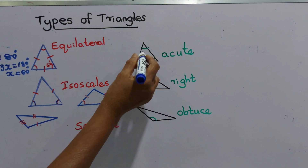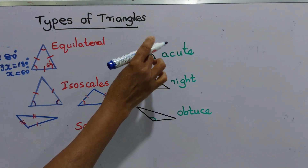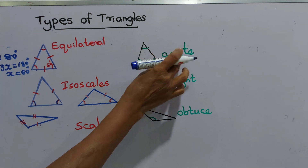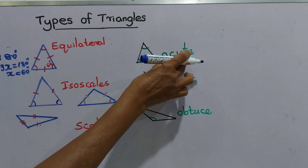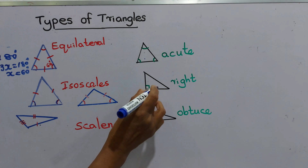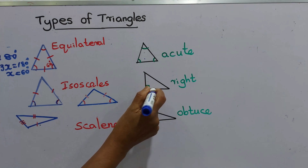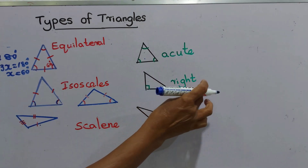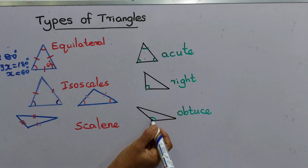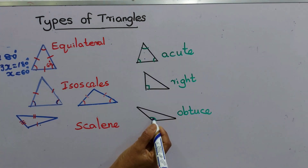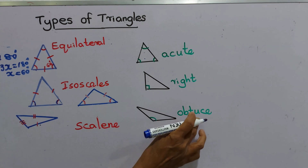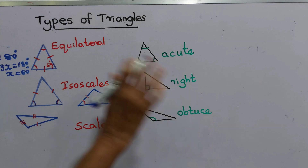In this triangle, all three angles are acute angles, so we name this an acute triangle. In this next triangle, there is one right angle, so we name this a right triangle. And in this triangle, you can see an obtuse angle, so we name this an obtuse triangle.